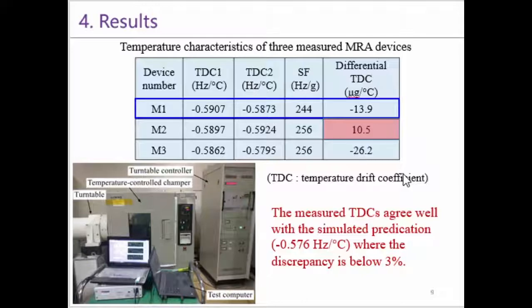The temperature characteristics of three measured MRA devices are shown in this table. We can see that the measured temperature drift coefficient agrees well with the simulated prediction where the discrepancy is below 3%. And the bias TDC is only about 10 microg per degree Celsius.